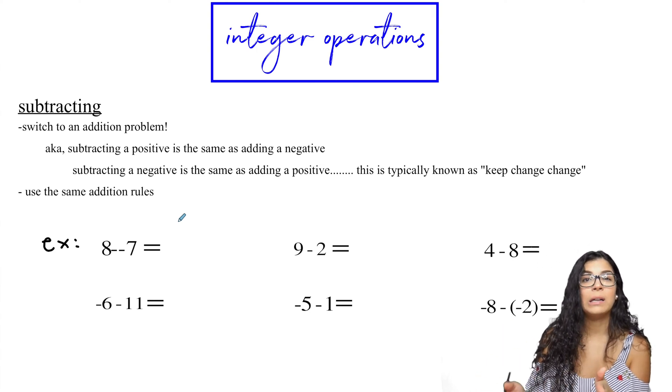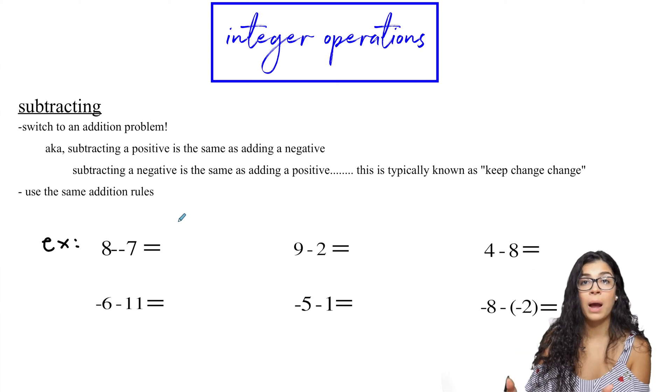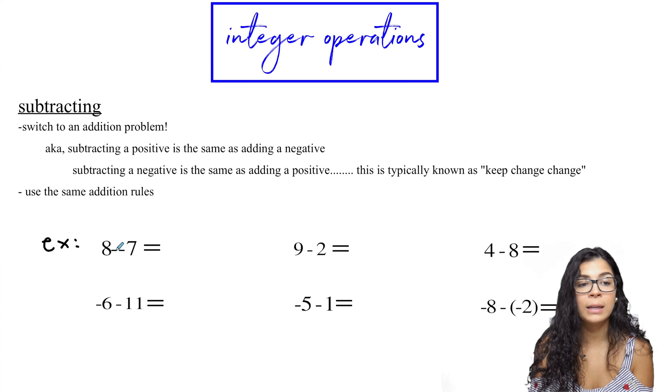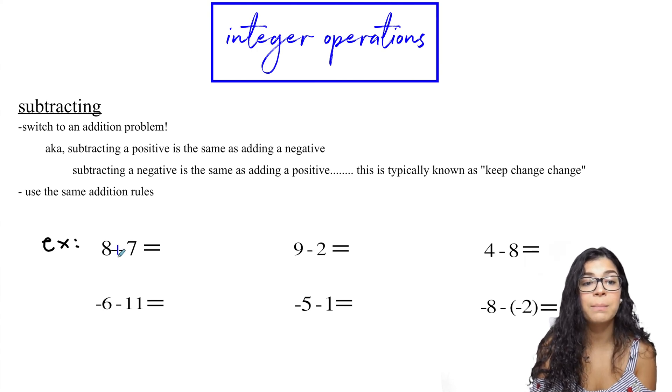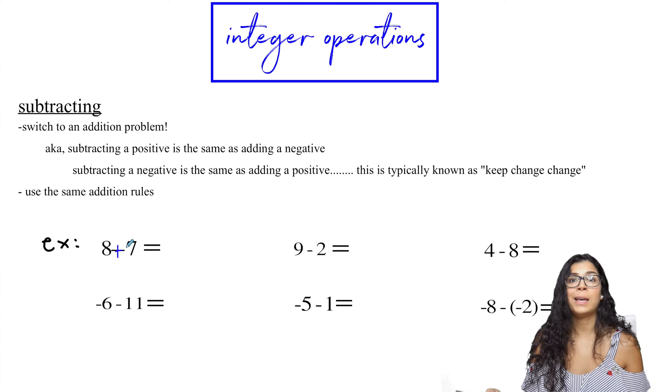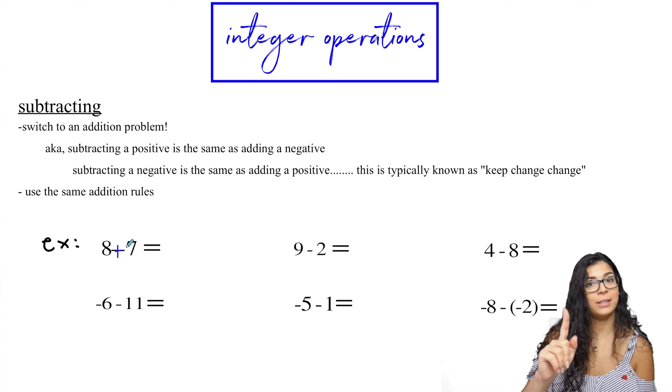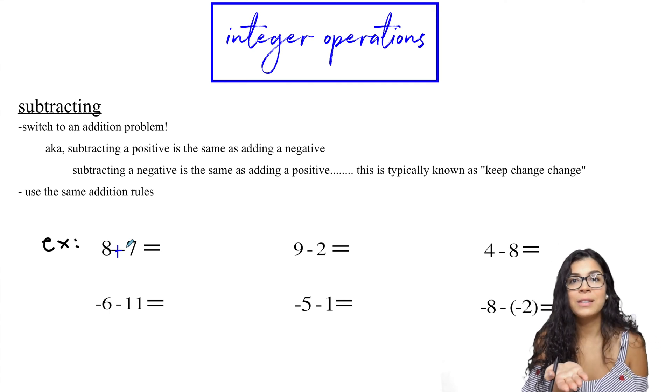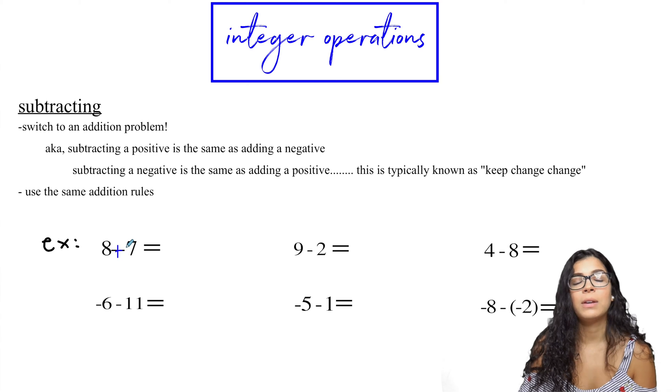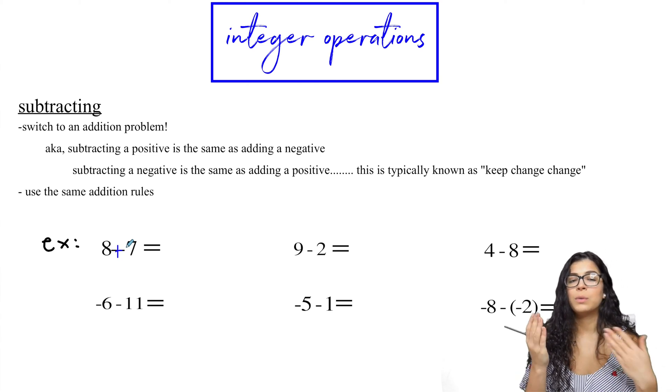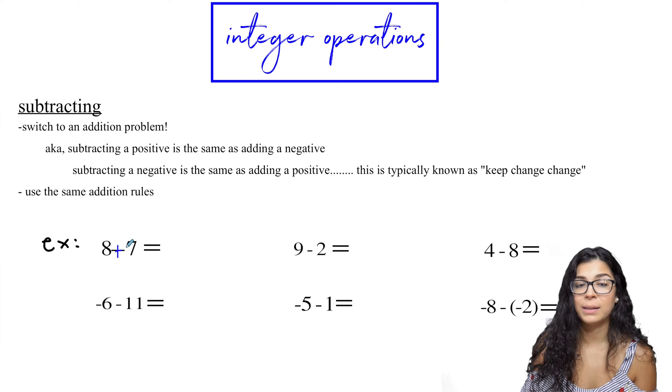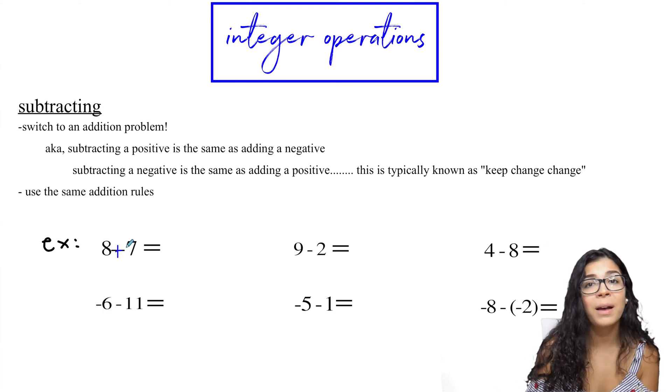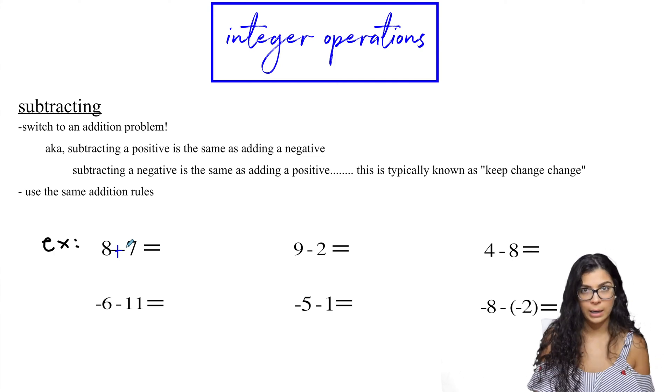And if I'm subtracting a negative, that's the same thing as adding a positive. So basically, if you have a double sign like this, you can look at it like a double negative is a positive. So like if I say, you can't not eat this awesome imaginary candy, then that means that you can. So a double negative is a positive. So subtracting a negative is the same thing as adding a positive. And if you're subtracting a positive, then that's the same thing as adding a negative.